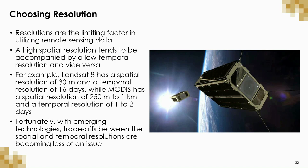Resolutions are one of the most important limiting factors in utilizing remote sensing data. You might think, why wouldn't you just use high spatial, high temporal resolution imagery? Unfortunately, there is often a tradeoff in resolution quality — high spatial resolution tends to be accompanied by low temporal resolution and vice versa. For example, Landsat 8 has a 30 meter spatial resolution and a 16 day temporal resolution, while MODIS has a lower spatial resolution of 250 meters to one kilometer but a much higher temporal resolution of one to two days. This is because images with higher spatial resolution have a smaller viewing area and therefore take longer for the satellite to revisit the same location. Fortunately, emerging technologies are making this tradeoff less of an issue.